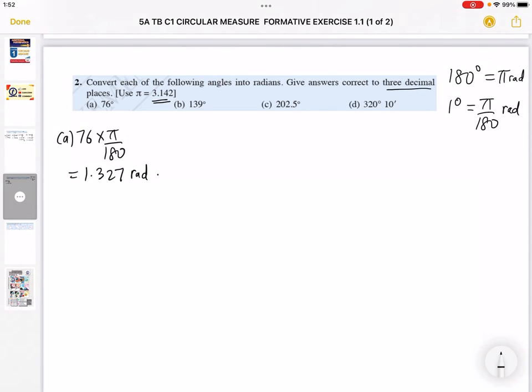For part b we have 139 degrees, we just multiply with pi over 180. This will give us 2.426 radians. The third one is part c, 202.5 degrees. You multiply pi over 180, use your calculator with 3.142, you will get 3.535, rounded correct to three decimal places.